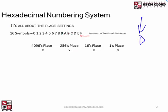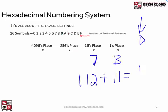Let's try 7B. 7 times the place setting: 16 times 7 equals 112. Then B equals 11 in decimal. So 112 plus 11 equals 123. That's how you convert 7B hex to decimal — just multiply each digit by its place setting and sum them up.